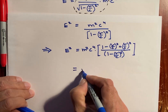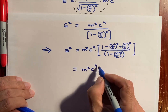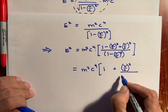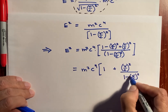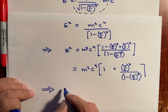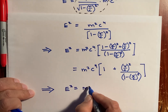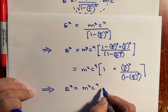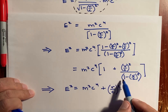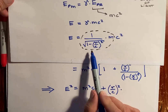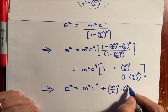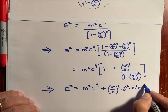Then we can see that this is equal to the following result. This implies that E² equals the first term, m²c⁴, plus the numerator times the remaining term, which is seen to be gamma squared — so we can see that this is gamma squared times c⁴.